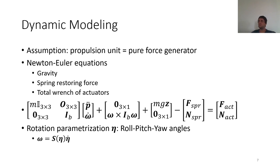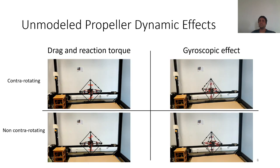We propose that the propulsion units are pure force generators. This assumption is especially true when we are working with contra-rotating propellers. We only have one-body dynamics that can be easily written using one set of Newton-Euler equations. We have three external forces acting on the system: gravity, spring restoring force and the associated torque at the center of gravity, and the total wrench of the actuators. To parameterize the rotations, we are using standard roll pitch yaw angles with an analytical Jacobian matrix that maps the derivatives of the parameters to the angular velocity vector omega.